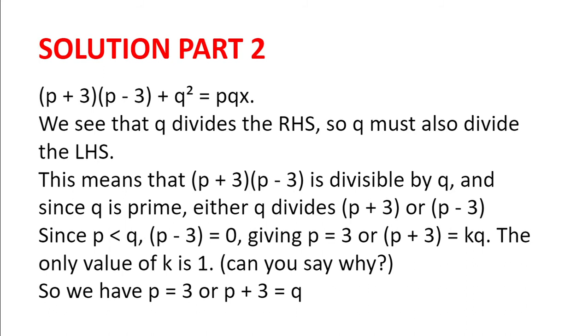Now, since p is less than q, we either have p minus 3 is 0, which gives p equals 3, or p plus 3 equals kq. It cannot be p minus 3 equals kq where k is a positive integer as p minus 3 is less than q.